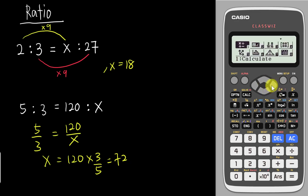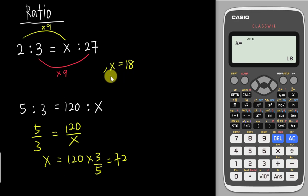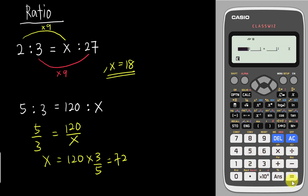Let's go into the ratio function in the calculator and verify we get the same results. For the first example using Pattern 1, I select option 1, then insert A=2, B=3, and D=27. X is the value to find, so just ignore it. The calculator tells you X equals 18. For the second example using Pattern 2, I insert 5:3 = 120:X and the calculator gives X equals 72. Quite convenient!